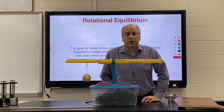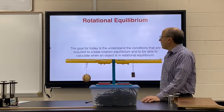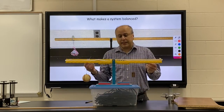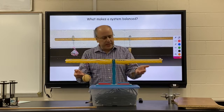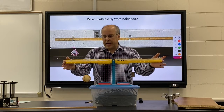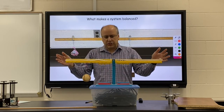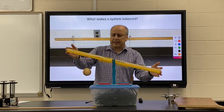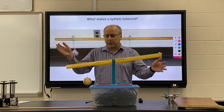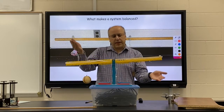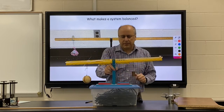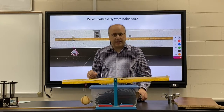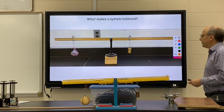Today we'd like to talk about rotational equilibrium. So what makes a system rotationally balanced? Here I have a baseball and a 200 gram mass, and I place them in just the right spot so that when I let go, the system will come back to equilibrium. No matter which way I tilt it, it'll eventually level itself out. So what makes a system self-leveling like that? What makes this system balanced?